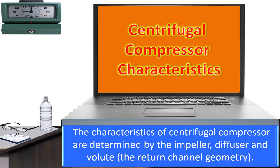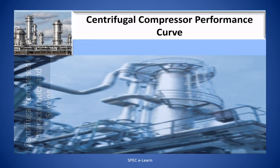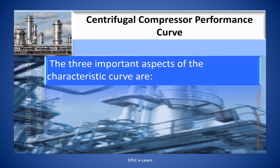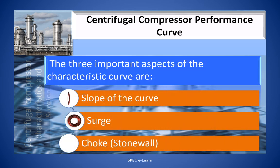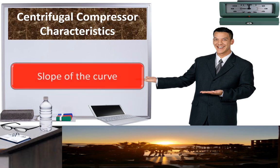Centrifugal compressor characteristics. The characteristics of centrifugal compressors are determined by the impeller, the diffuser and volute, which is a return channel geometry. Three important aspects of the characteristic curve are the slope of the curve, surge and choke, which is also called stonewall. First, the slope of the curve.